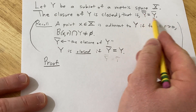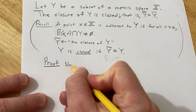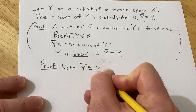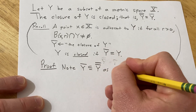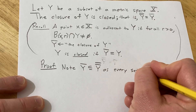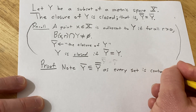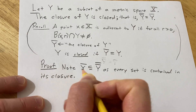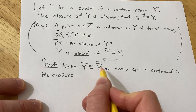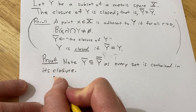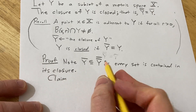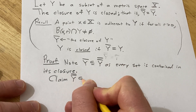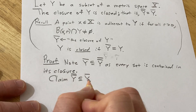We have to show these two sets are equal. Every set is contained in its closure, so in particular the closure of Y is contained in the closure of the closure of Y. So now we just have to show that the closure of the closure of Y is contained in the closure of Y. Because we use double inclusion — to show two sets are equal, we have to show they're subsets of each other.